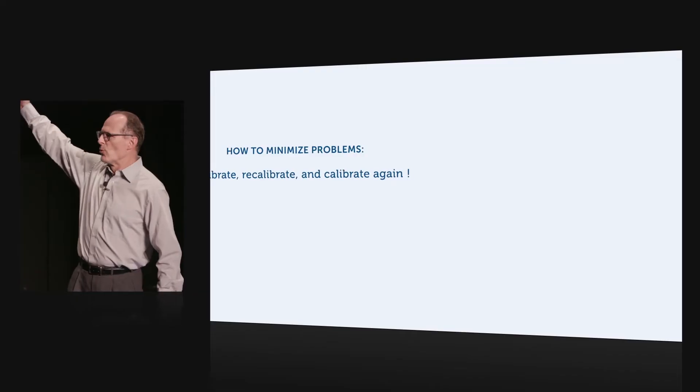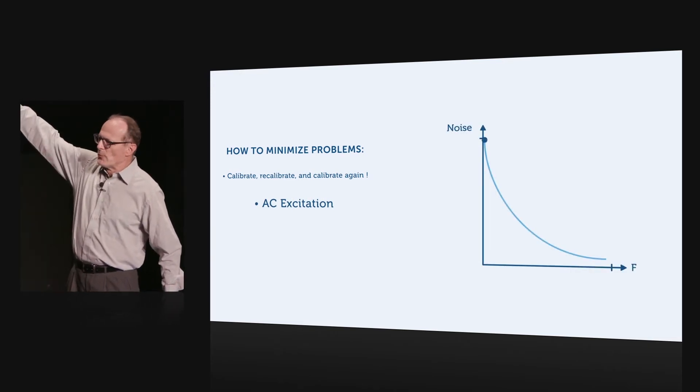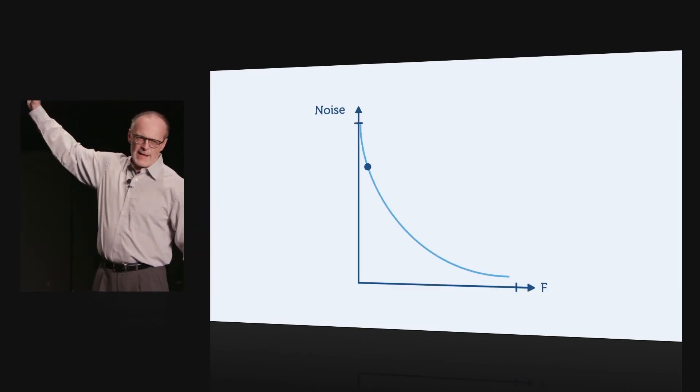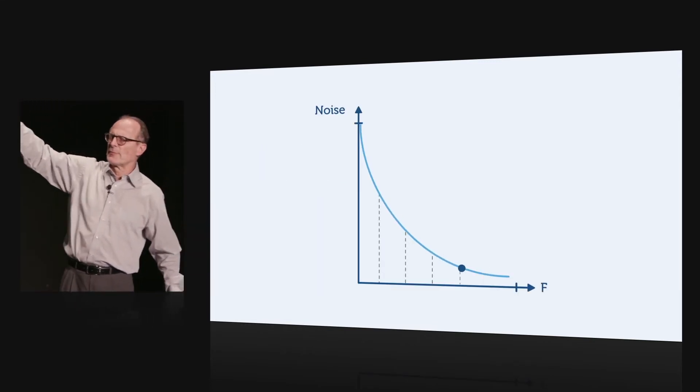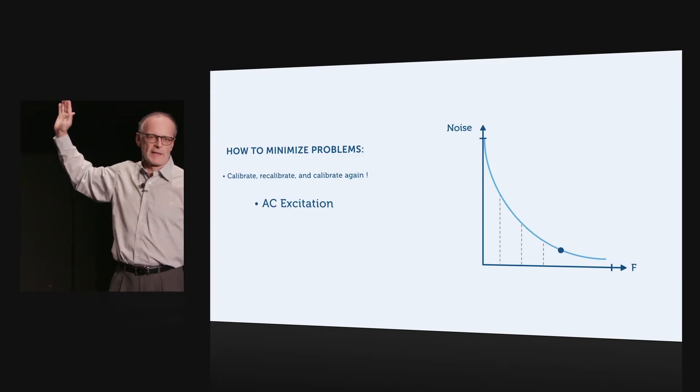Okay, so calibration is very important. Point taken. Now, we can also do something about this noise. As you can see, especially the 1 over F noise, if we were able to operate at a higher frequency instead of, so get ourselves away from DC, we can reduce the noise dramatically.